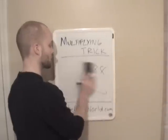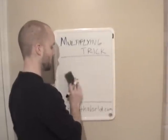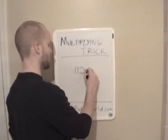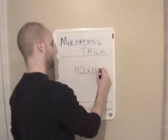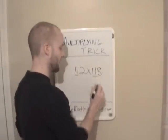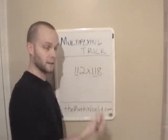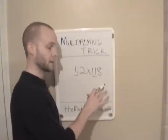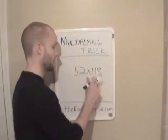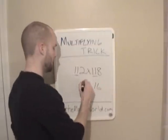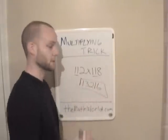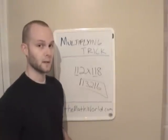Now this also works with higher numbers. Let's say we do 112 times 118. As you can see, both tens portions are 11 — they're the same — and 2 plus 8 is still 10. So in this case it'll still work. 2 times 8 is 16, and 11 times 12 is 132. So our answer is 13,216.